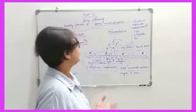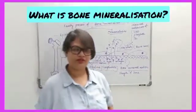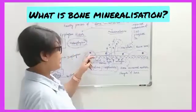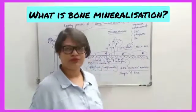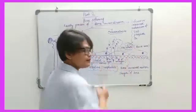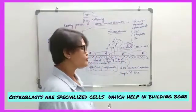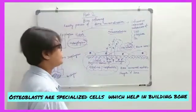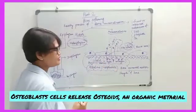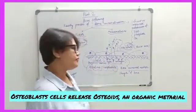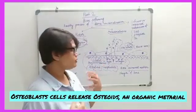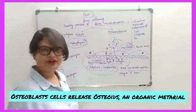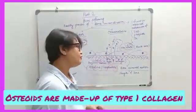Before discussing that, I would like to say about bone mineralization. What is bone mineralization? We all know that there are some specialized cells in the bone called osteoblasts. They help in building bone. These osteoblast cells secrete some kind of organic material called osteoids. These osteoids are made up of type 1 collagen.